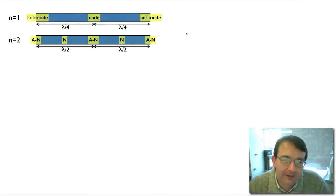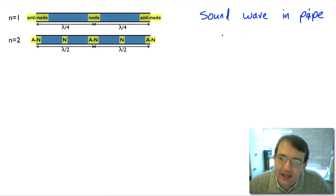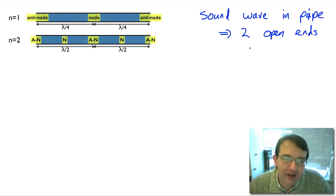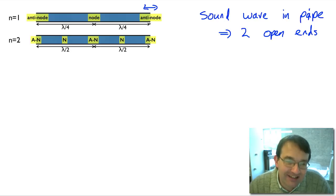Now we've looked at standing waves on strings, let's look at a different type: a sound wave in a pipe, starting with two open ends. This is different from the case with two closed ends. At an open end, the medium is free to vibrate. Because the pressure outside remains constant, it's only the pressure in the pipe that is allowed to vary. So our acoustic or sound wave is going to have an antinode at the open end, because the air there is very free to vibrate — there's nothing stopping it.